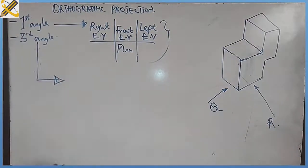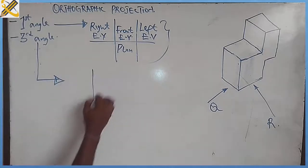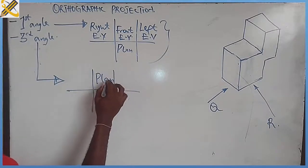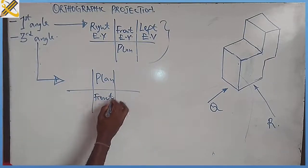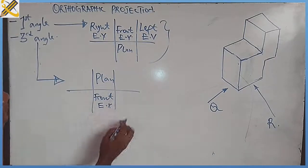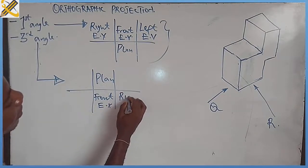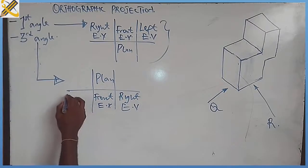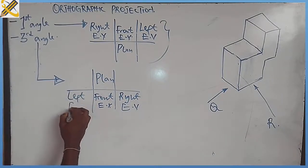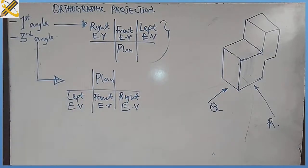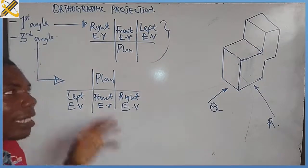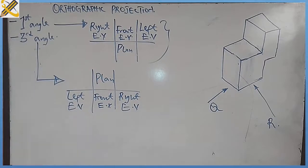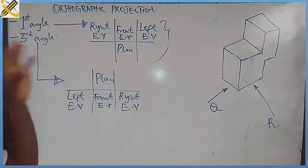For third angle projection, this is its chart. We have the plan at the top, here we have the front elevation, here we have the right end view, and here we have the left end view. So you can actually see the basic difference between the first angle and the third angle.